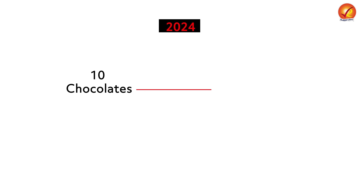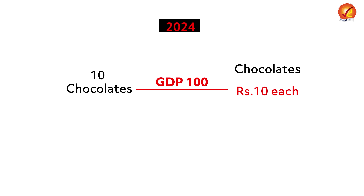This is where we have to understand very specifically that if I take the quantity and the price of goods of that particular year, the GDP I am trying to calculate is a nominal GDP. But there is one more type — real GDP — where I take the quantity of goods produced in a particular year. Let's say in 2024, my country produces just 10 chocolates, and those 10 chocolates are worth 10 rupees each. So the GDP is 100 rupees.